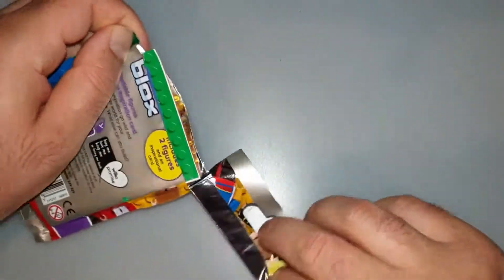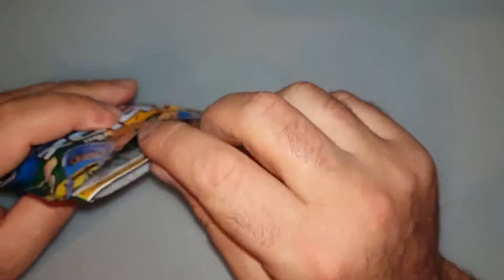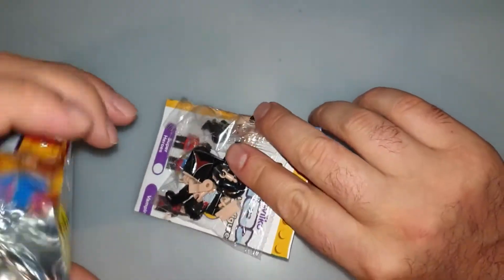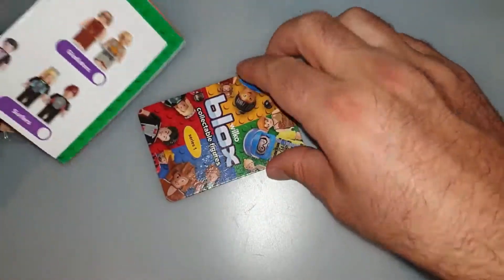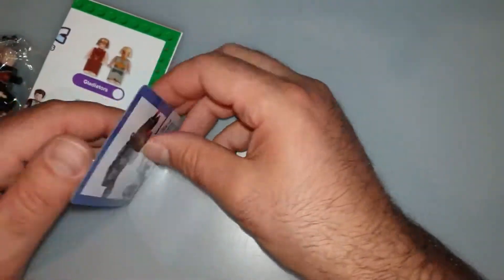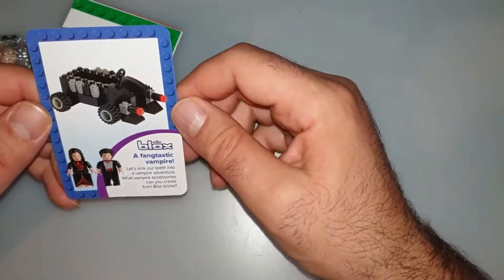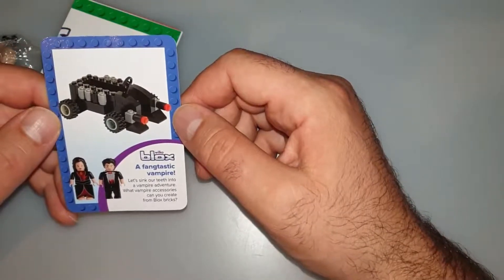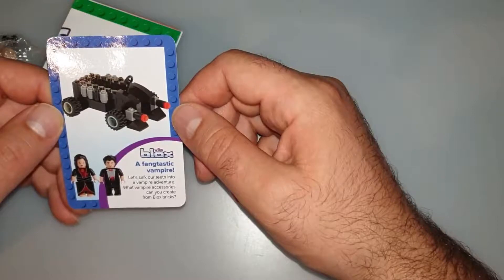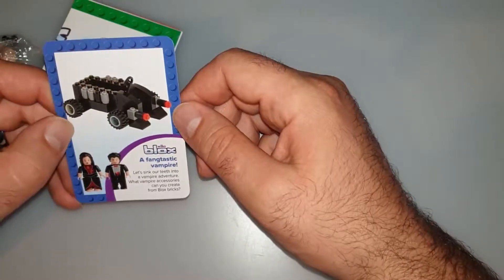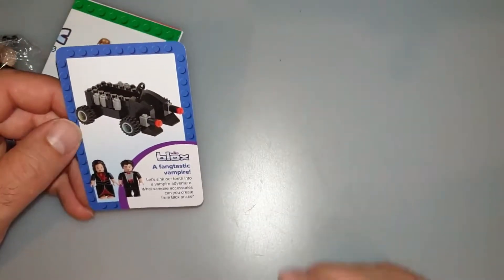So let's see what's this about. That's the box content. So we have a card here. I guess we have the fantastic vampire. Let's sink our teeth into a vampire adventure. What vampire accessories can you create from Blocks bricks? Let's find out.